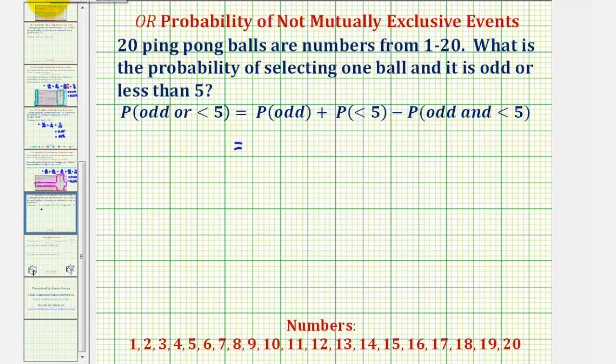Well, if we consider the numbers from 1 to 20, ten of these numbers would be odd: one, three, five, seven, nine, eleven, thirteen, and so on. So the probability that the ball would be odd would be 10/20 plus the probability that the ball would be less than 5. Well, the balls that are less than 5 would be 1 through 4, so the probability of being less than 5 would be 4/20.